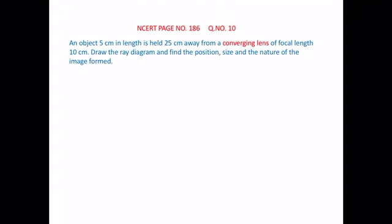In this question we are given the object distance, denoted by small u, 25 cm. I have taken sign convention as minus because we know that object distance is always negative. Object height is also given, denoted by HO or H, that is 5 cm. It is always positive.